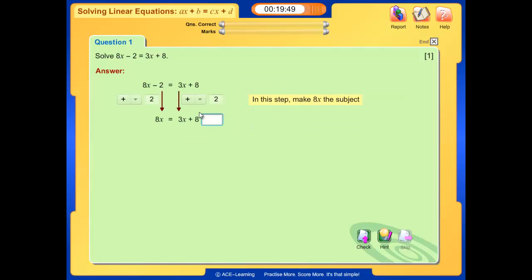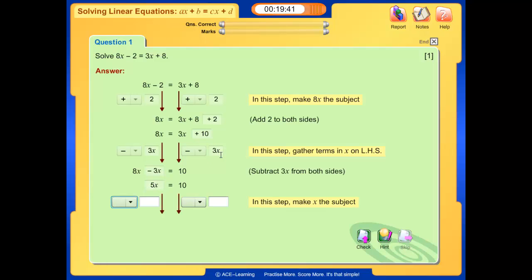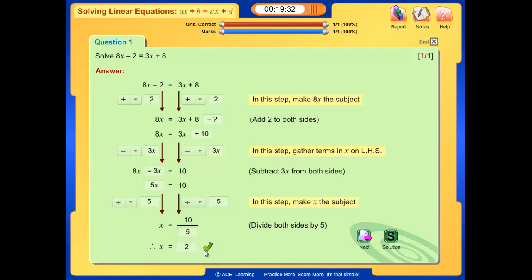Step by step, the system takes them through the solution. Line by line, the system auto-marks the input. If they make a mistake, they are not allowed to continue until they have corrected it.